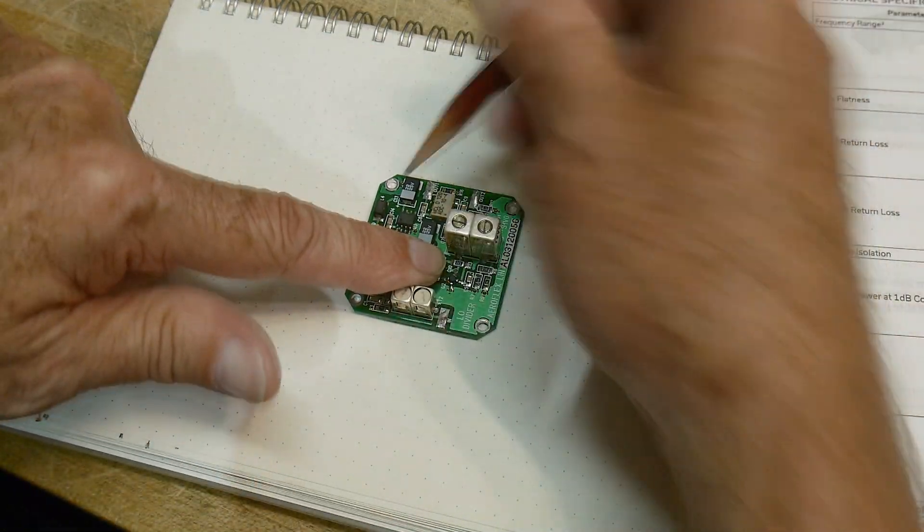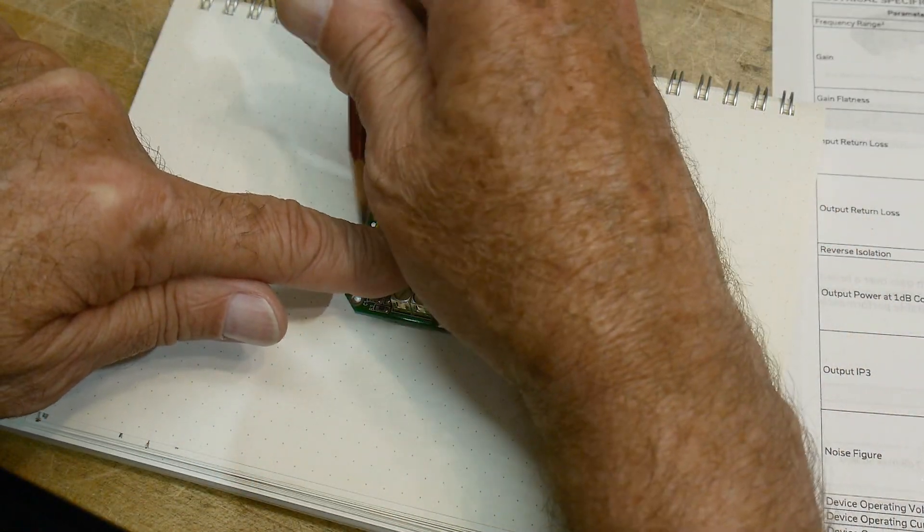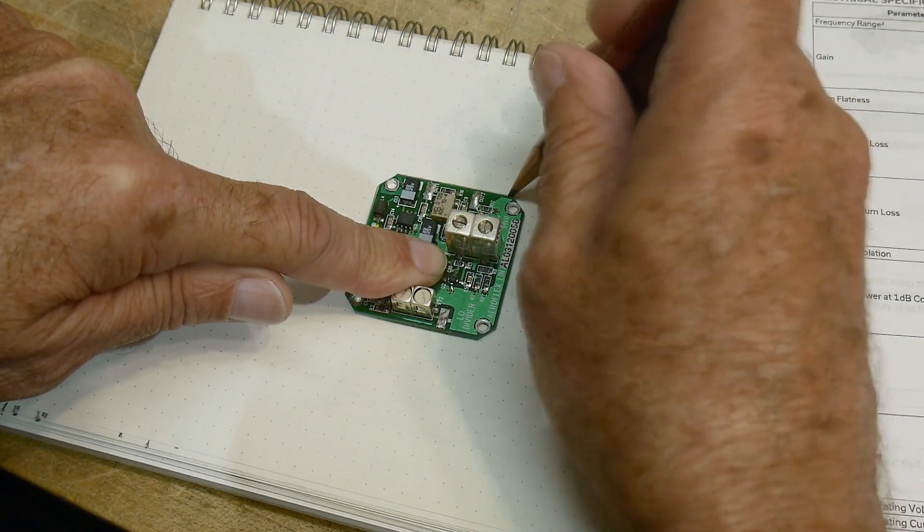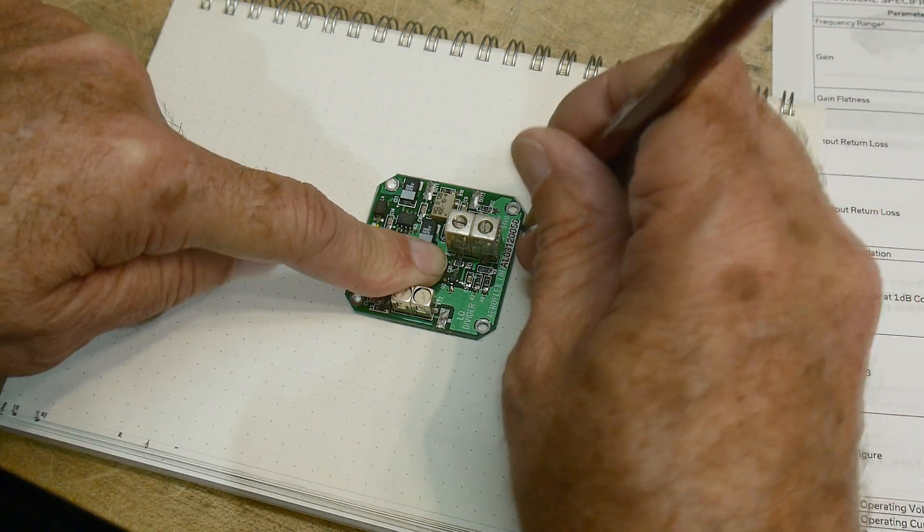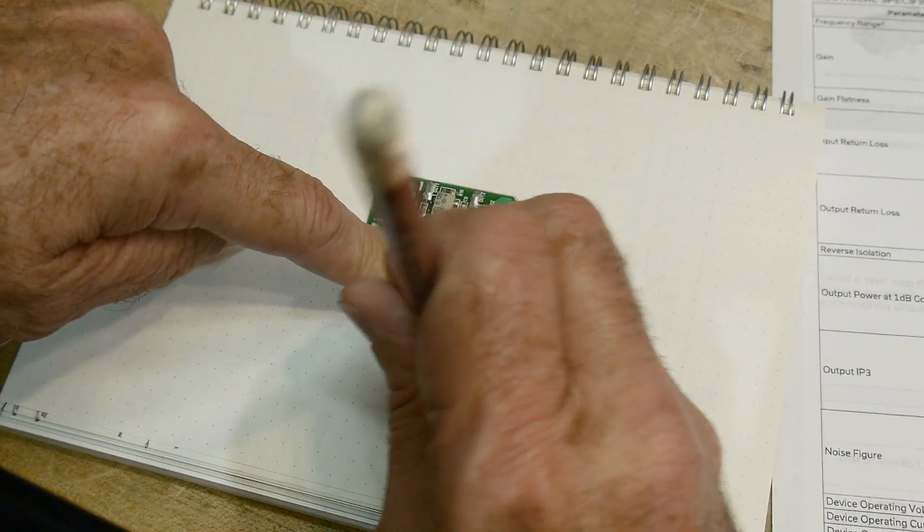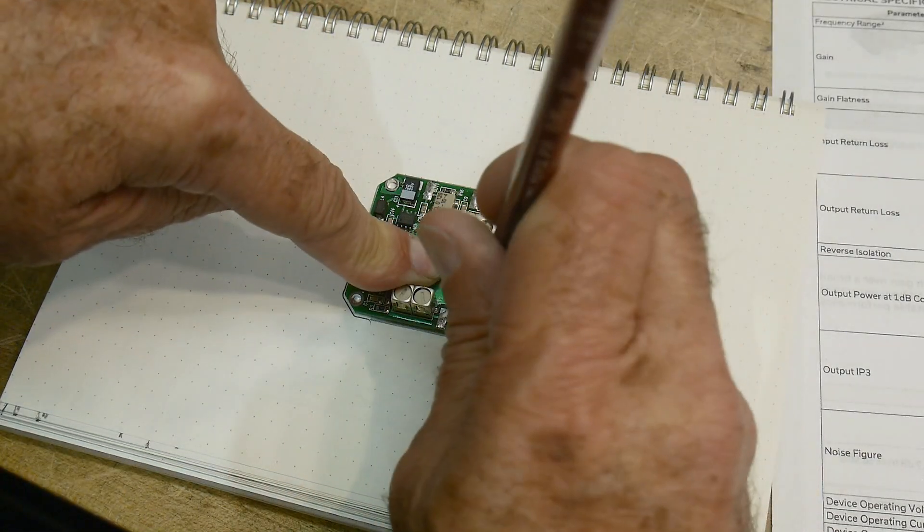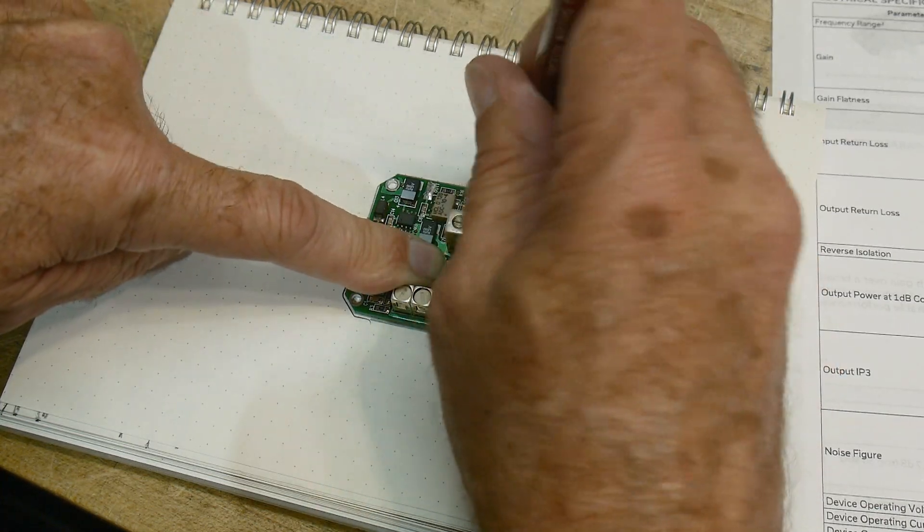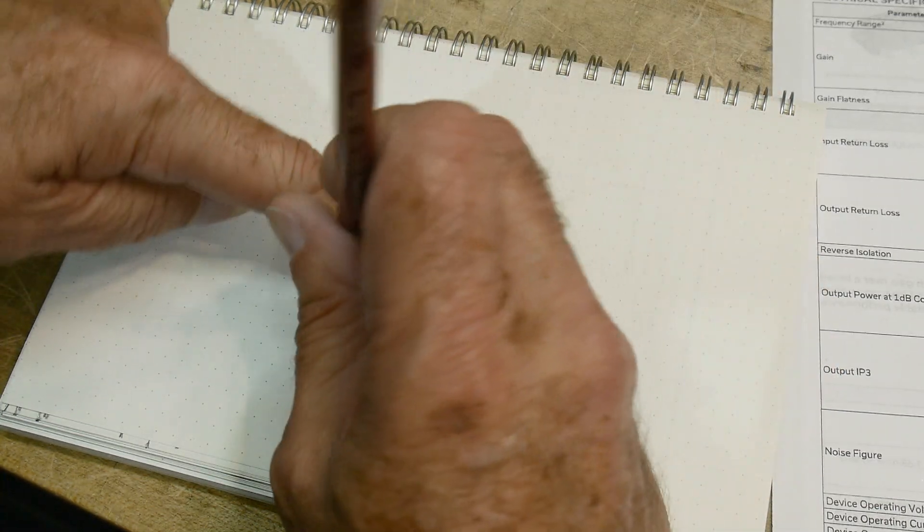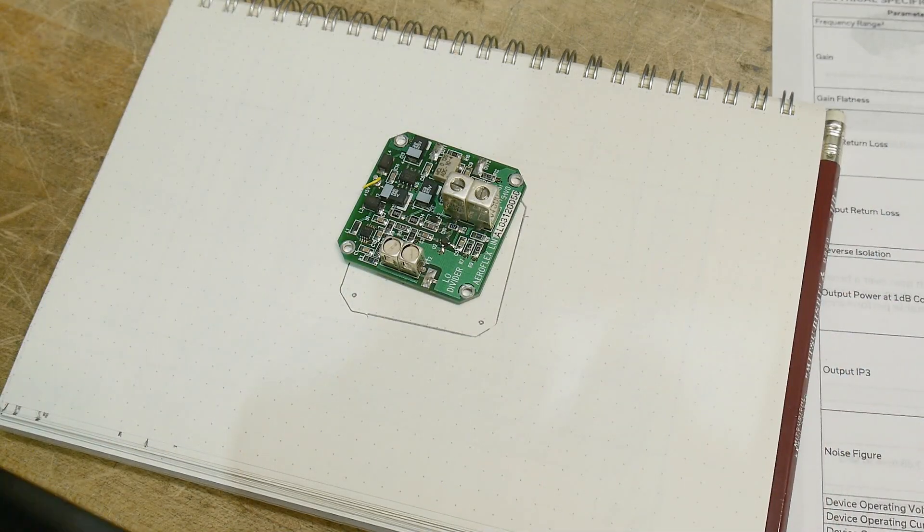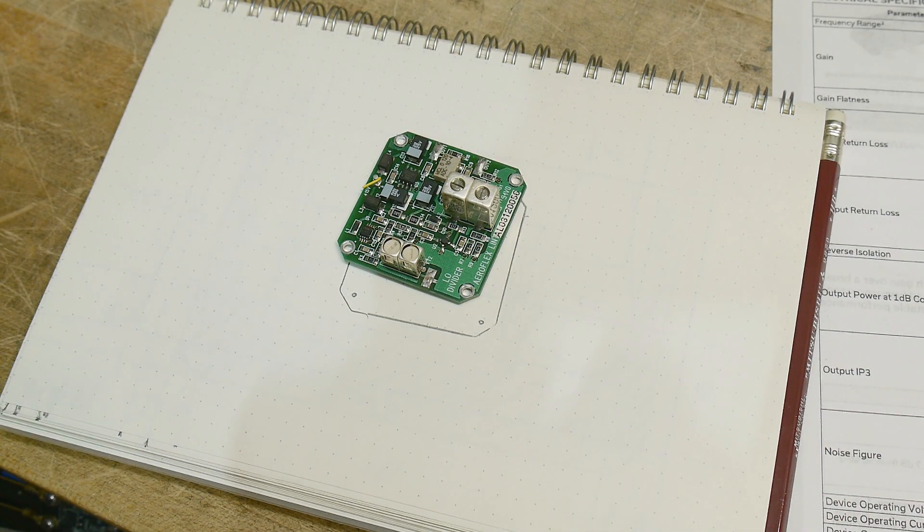All right, so I'm just going to draw around the board here. And we will then put dimensions on it. And we want to have holes. All right, so there's our board, and we need to take some dimensions off the board.